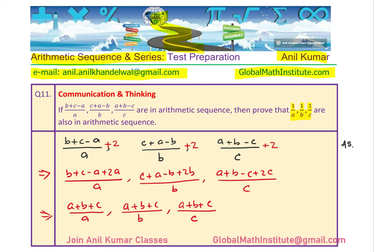These three terms are in arithmetic sequence. Now, if I factor out (a + b + c), the three terms become 1/a, 1/b, and 1/c. These three should therefore be in arithmetic sequence, and that is how we show that 1/a, 1/b, and 1/c are, in fact, in arithmetic sequence.